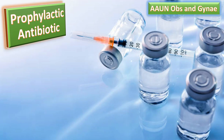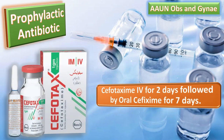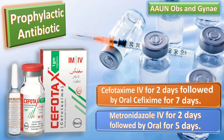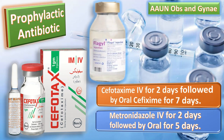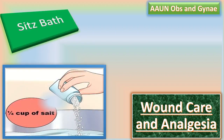Prophylactic antibiotics: the preferred antibiotics for third and fourth degree perineal tear include cefoxitin IV for two days followed by oral cefixime for seven days, and metronidazole IV for two days followed by oral for five days.